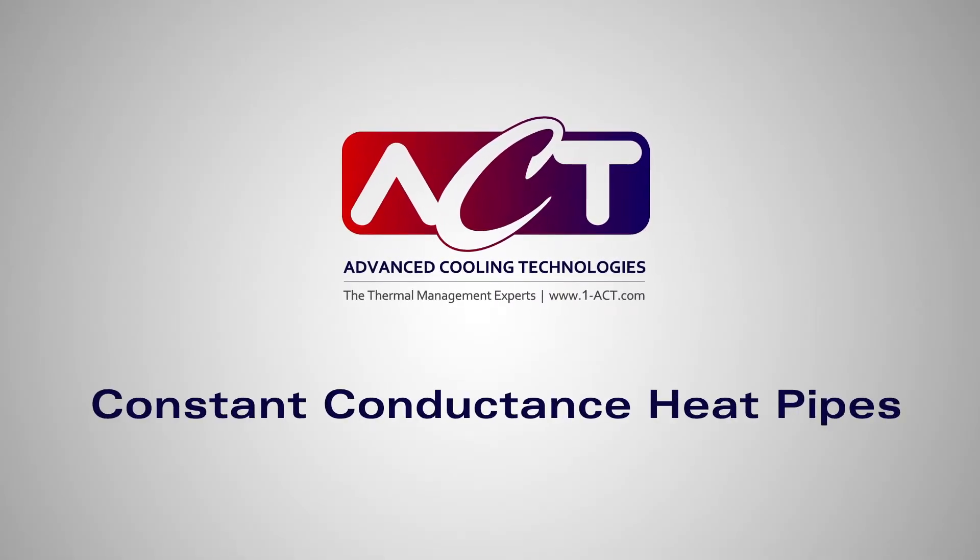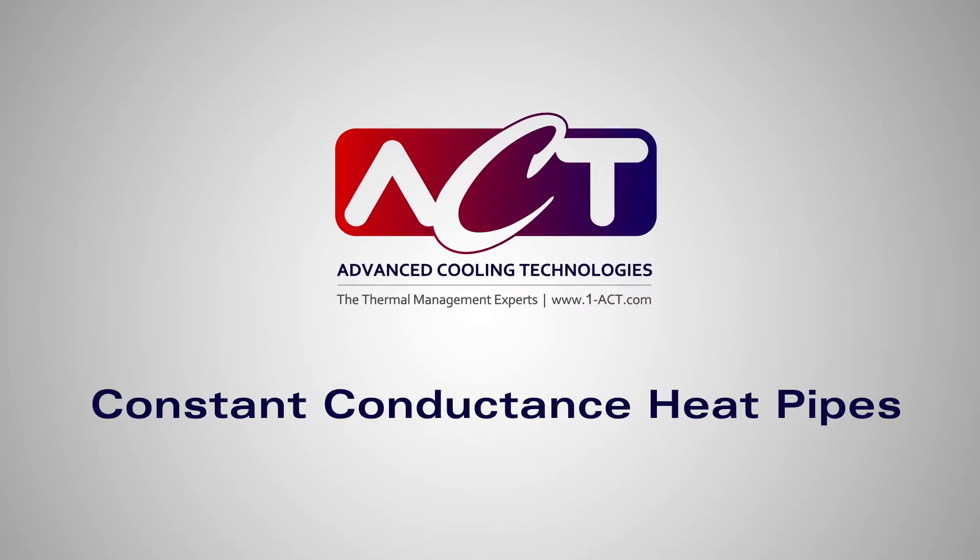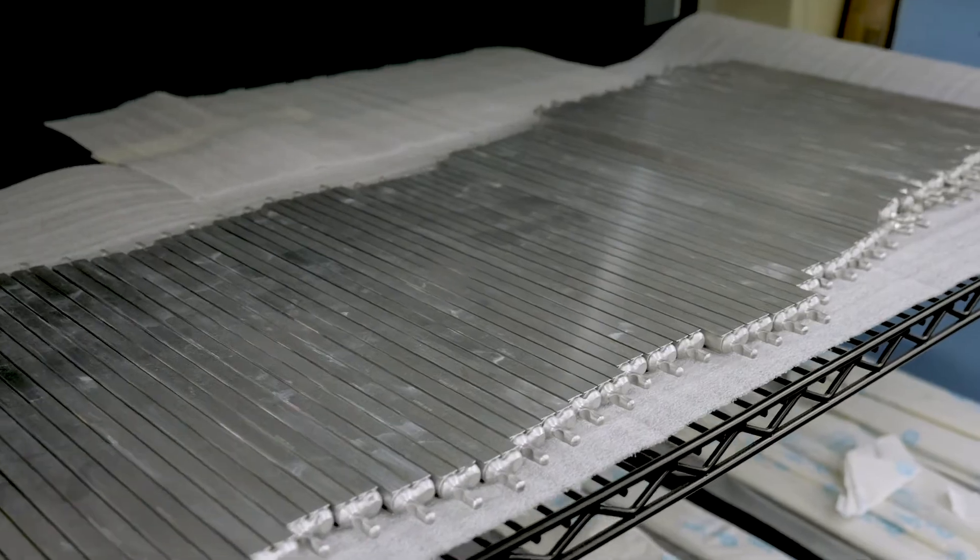We decided to get into the Aluminum Ammonia CCHP product line around 2005. When we did that, we invested heavily into an internal research and development program to come up with the processes and procedures to manufacture Aluminum Ammonia heat pipes.